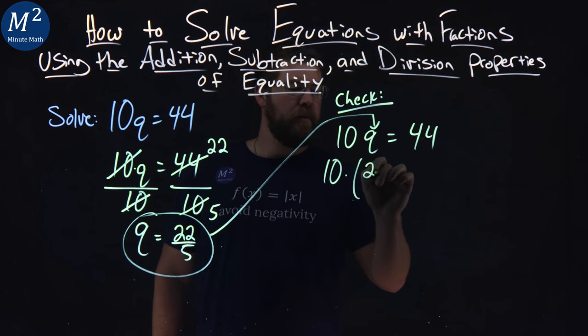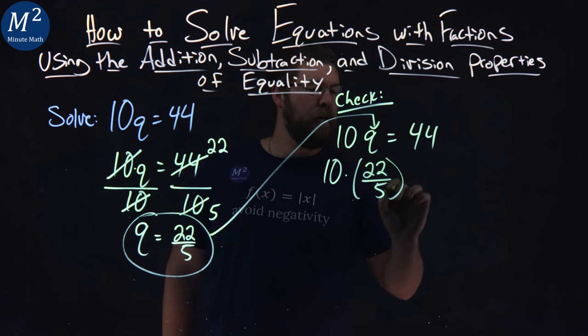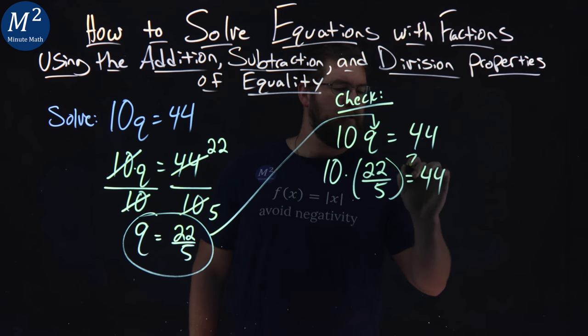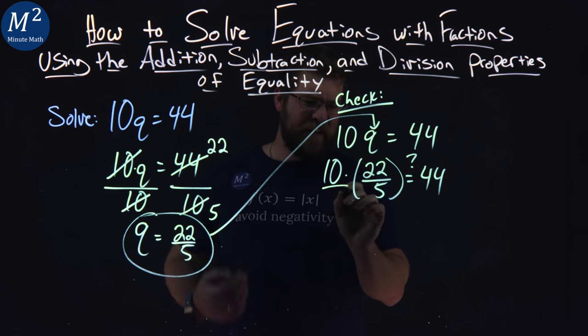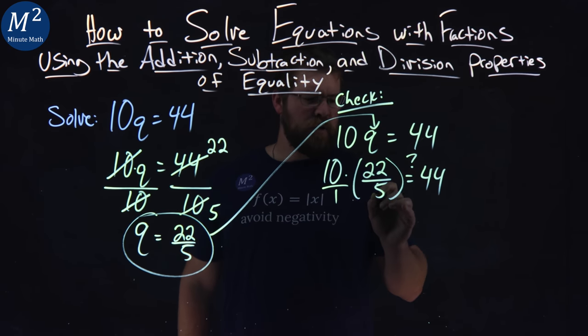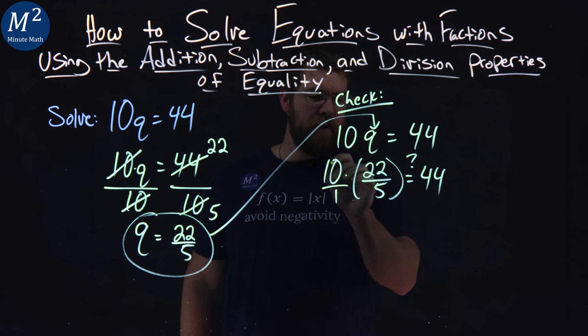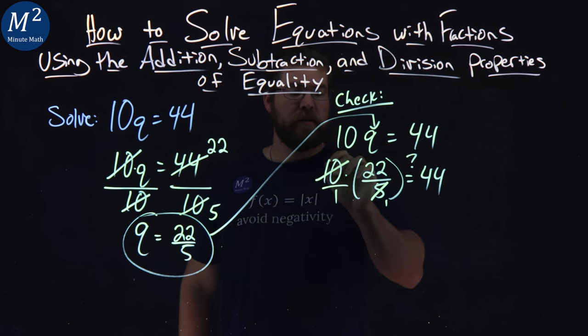10 times 22 over 5 equals 44. Let's see if the left and right hand side are equal. Now 10 is really 10 over 1, and so we can cancel out here. 5 goes into 10, we got 1 here 2 times.